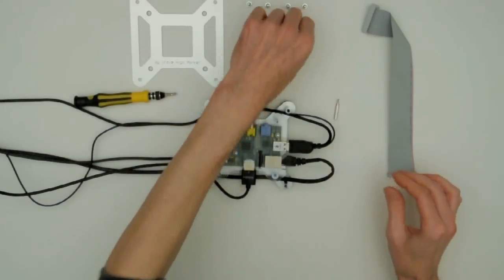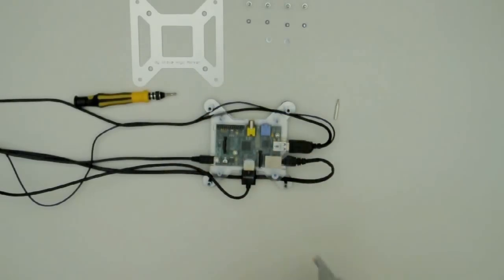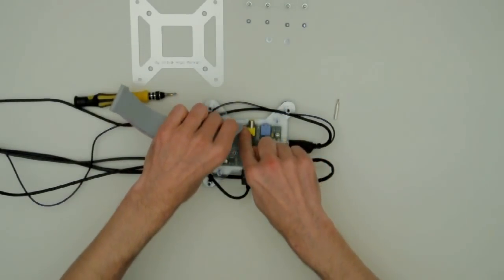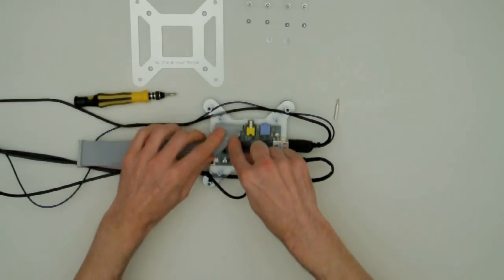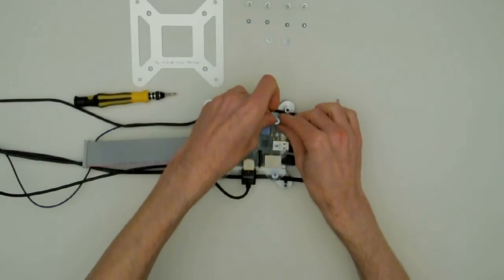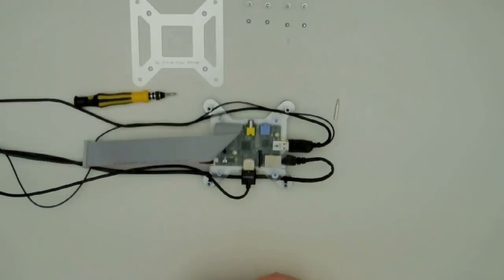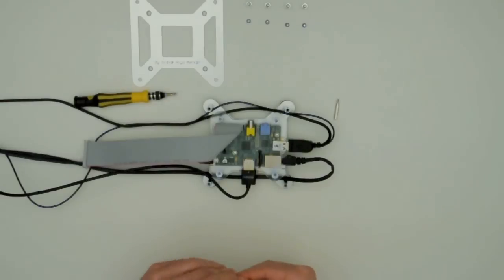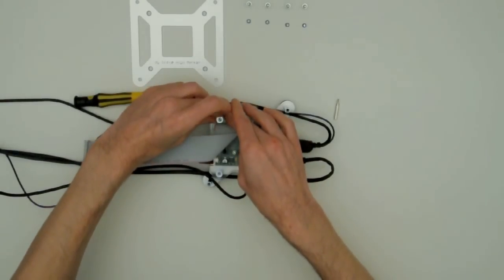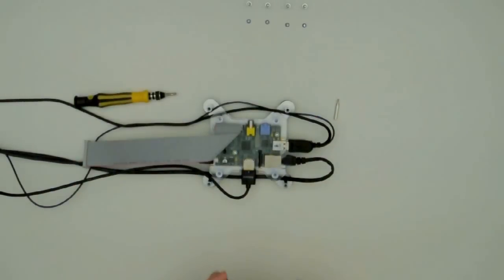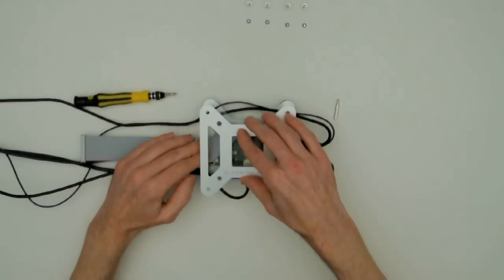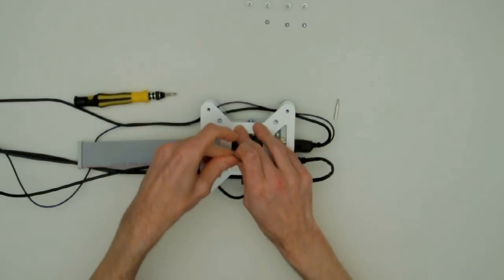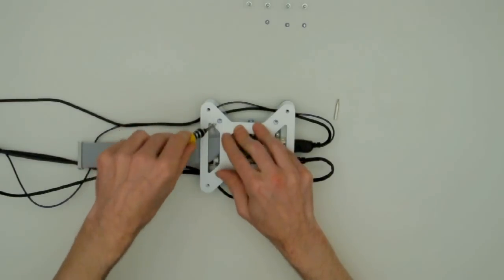Then the washers. Oh, I'm forgetting one. Flat cable. Then the top plate. The countersunk screws, the small ones.